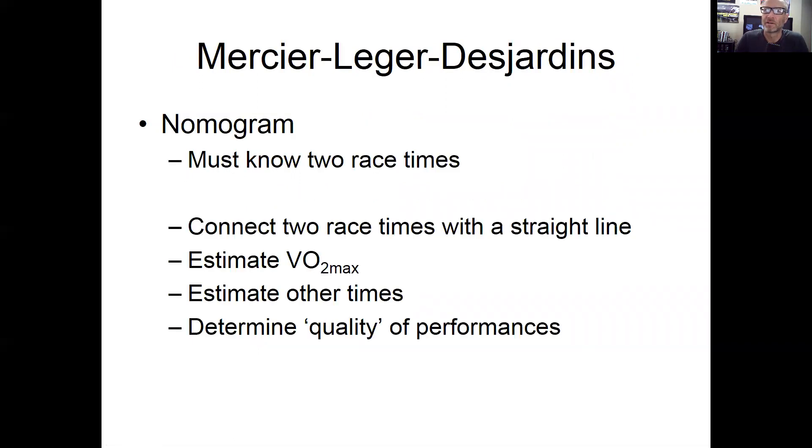Mercier-Leger-Desjardins, which is another approach - a little different though. It's a nomogram, so you have to know two race times. So now they're getting away from using physiology but using actual performances to predict future performances. What you do is you take this nomogram - this is sort of a fun one to do - you connect two race times that you have, estimate VO2 max, you can use that to estimate other times of other races, and then ultimately even determine quality of performance.